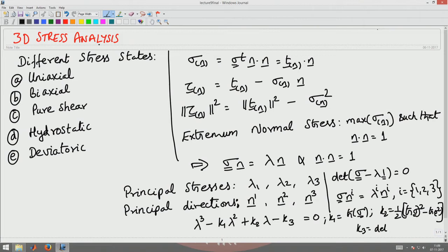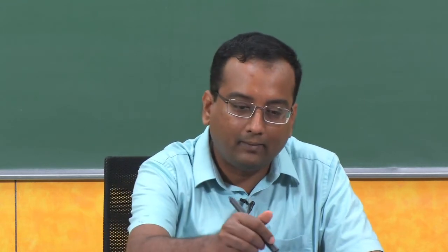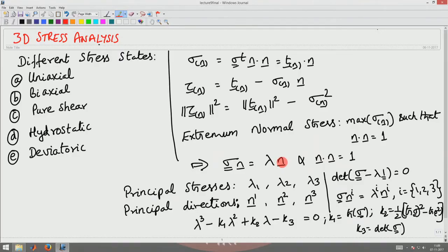In the characteristic equation, k1 is the trace of sigma, k2 is one-half of (trace of sigma squared minus trace of sigma²), and k3 is the determinant of sigma. These k1, k2, k3 are the invariants of the stress tensor — they do not change with the coordinate system used to represent the stress tensor. Solving this cubic equation gives three real roots (since sigma is symmetric), denoted lambda1, lambda2, lambda3, with corresponding principal directions n1, n2, n3.